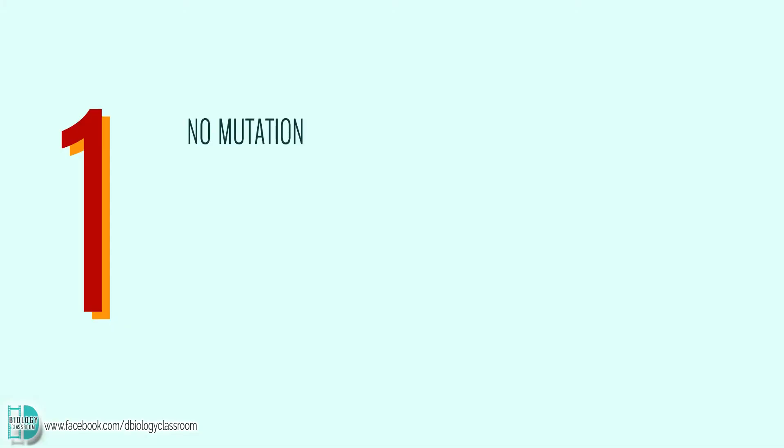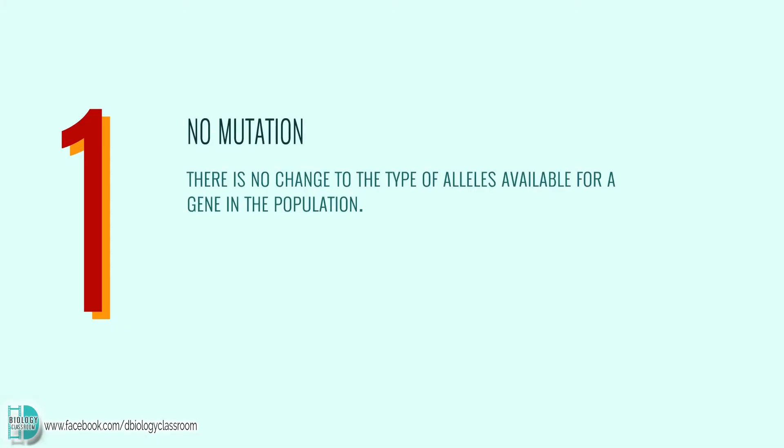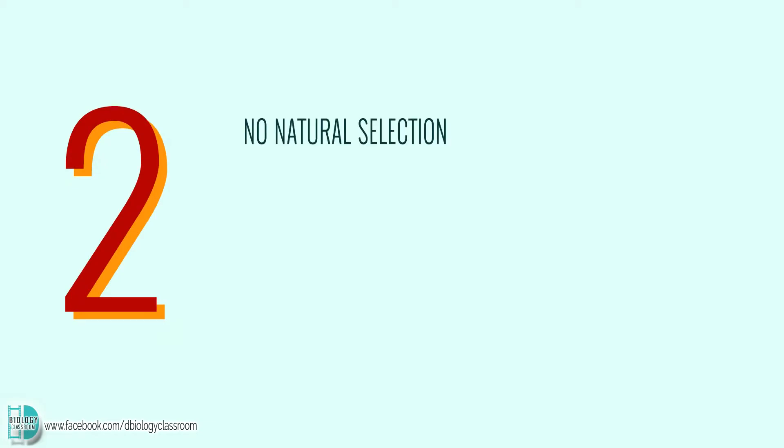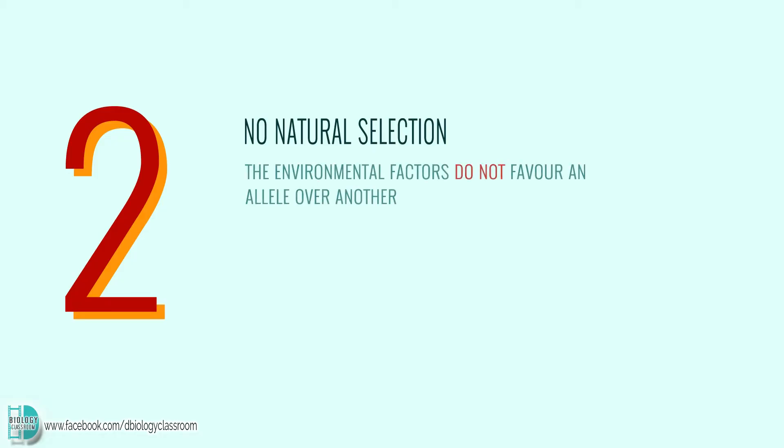The criteria include: number one, mutation is not occurring — there's no change to the type of alleles available for a gene in the population. Number two, natural selection is not occurring — the environmental factors do not favor one allele over another.